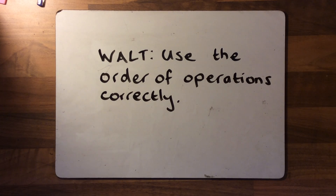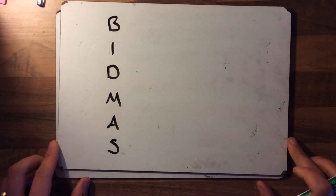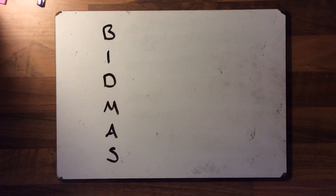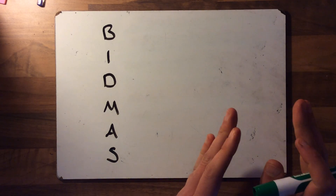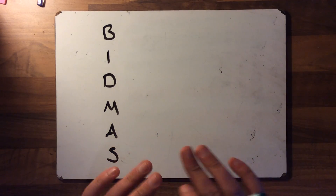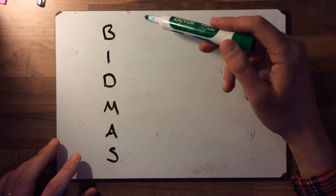Today we are learning to use the order of operations correctly, which might sound quite a wordy learning objective. However, it's something you've done before, and that is just the correct terminology for BIDMAS — something that both classes, both myself and Mrs. Rose's class, were pretty good at when we did this before Christmas. BIDMAS is the order of operations — the order that we approach a calculation that has more than one operation in it. When you have more than one operation in a calculation, it's really important that you know the order to approach it to always get to the right answer, and that's why we have this mnemonic BIDMAS.